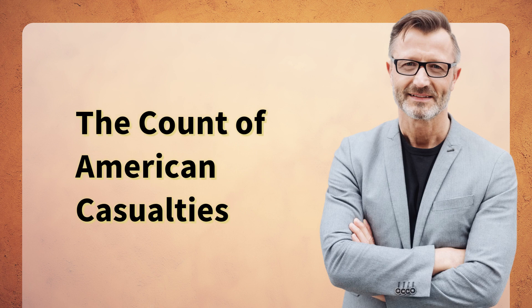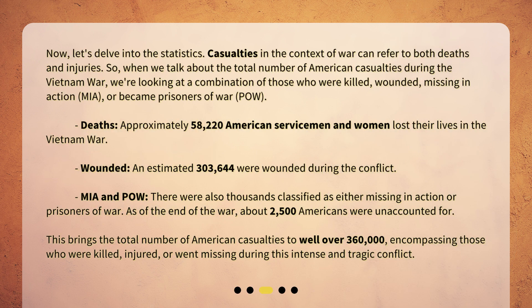The Count of American Casualties. Now, let's delve into the statistics. Casualties in the context of war can refer to both deaths and injuries. When we talk about the total number of American casualties during the Vietnam War, we're looking at a combination of those who were killed, wounded, missing in action (MIA), or became prisoners of war (POW).